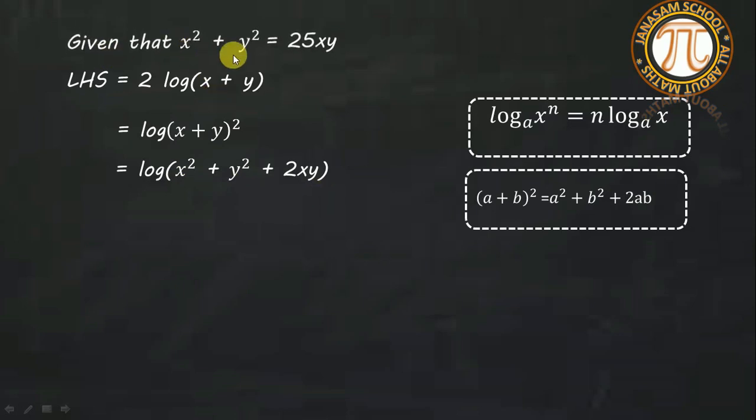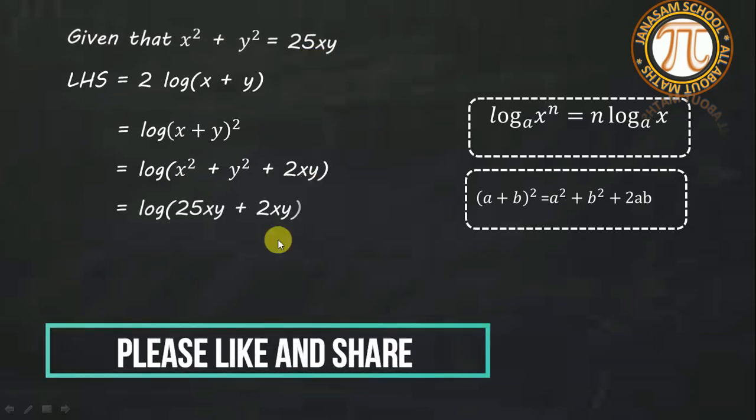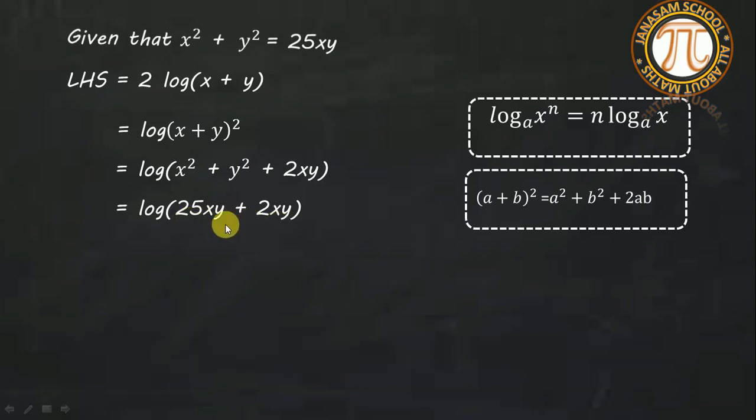Now x² + y² equals 25xy. So this becomes 25xy + 2xy. The xy terms can be combined, so log 27xy.